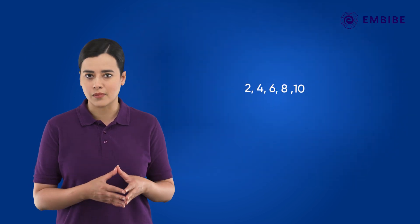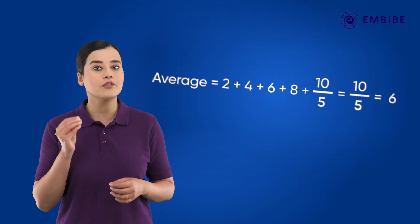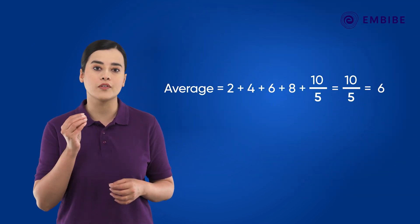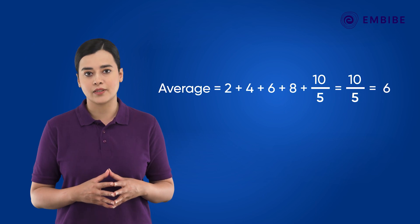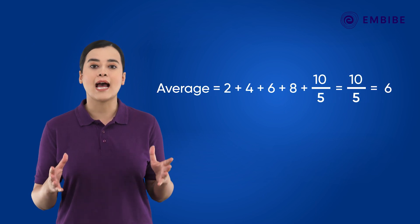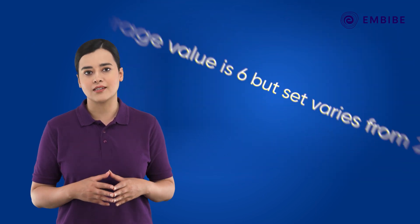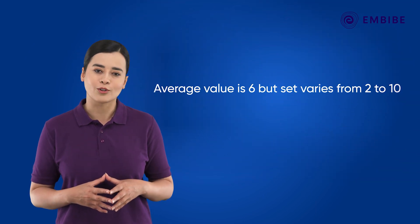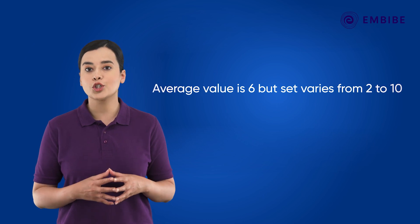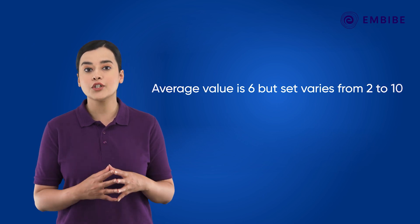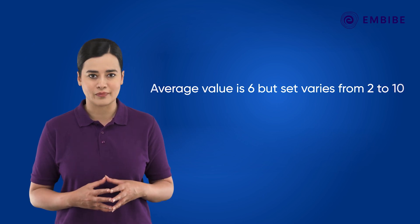Now if we have a set of numbers, we can measure how far a number from that set is spread out from the average value of the set of numbers. This concept is known as variance. Let's learn more about variance and standard deviation of continuous distribution in this session.